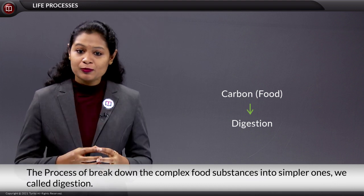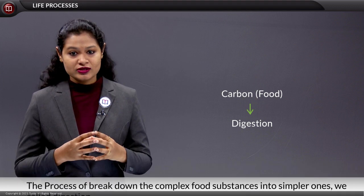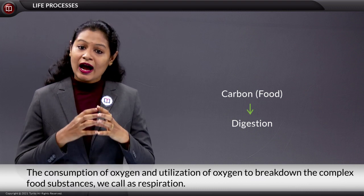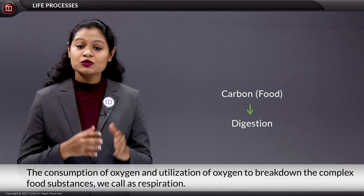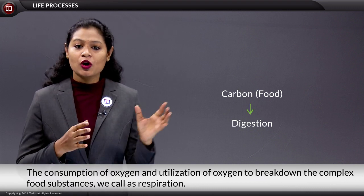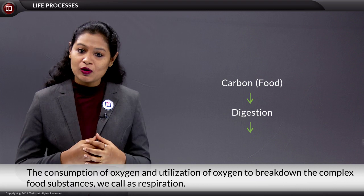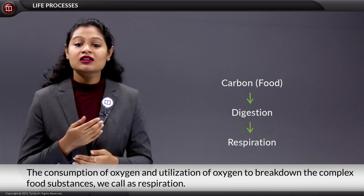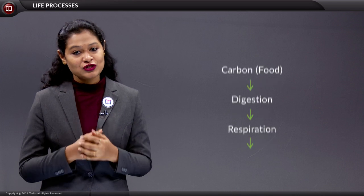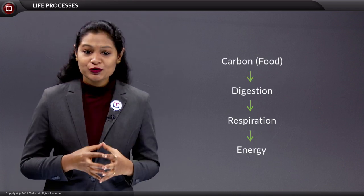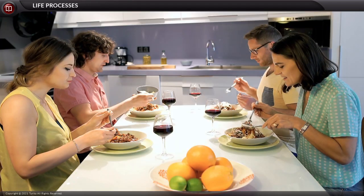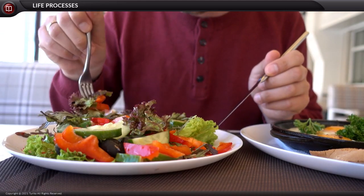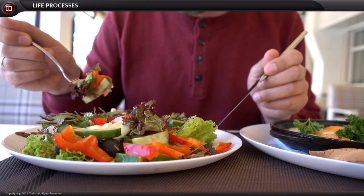For this breakdown, we require oxygen. The consumption of oxygen and its utilization to break down complex food substances is what we call respiration. With this, there is a release of ATP, which is the source of energy. So the food we have consumed is broken down into simpler forms, and energy in the form of ATP is produced.